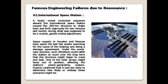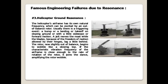Under the worst-case scenario, such vibrations could rattle the station so much over the long term that the structure might begin to crack and leak. One of the solar arrays might bend out of position, affecting the station's power-generating system. Experts cautioned that it was too early to determine how likely these scenarios might be.